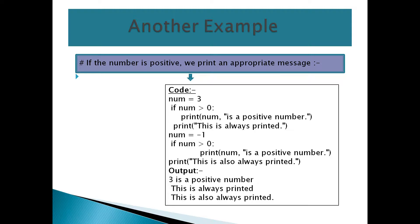Another example: check if a number is positive. num equals 3. If num is greater than 0 — 3 is greater than 0 — condition is true, so print 'num is a positive number'. Now with num equals -1: if num is greater than 0 — -1 is greater than 0 — condition is false, so this code will not be executed. The line 'this is always printed' runs regardless.